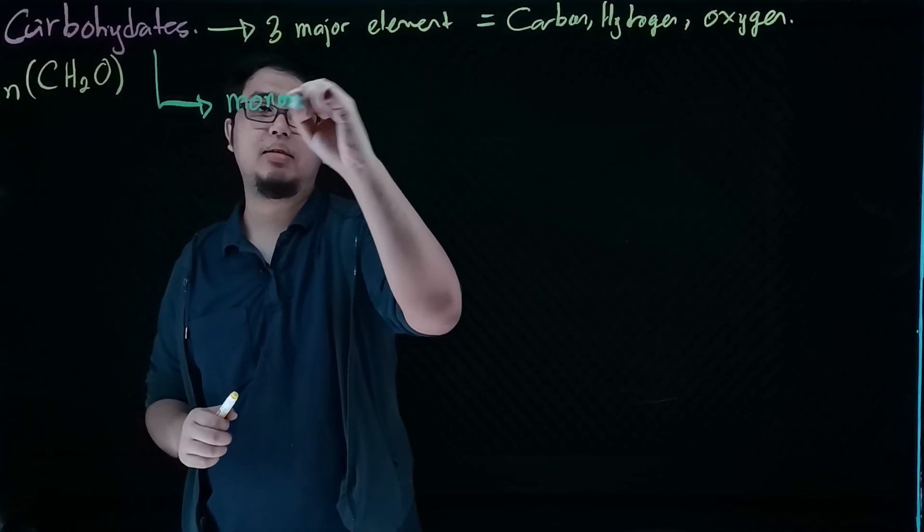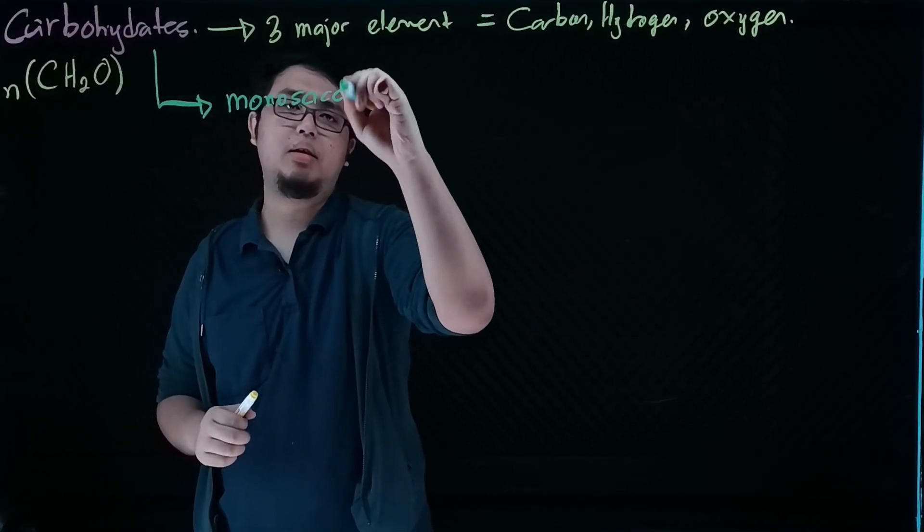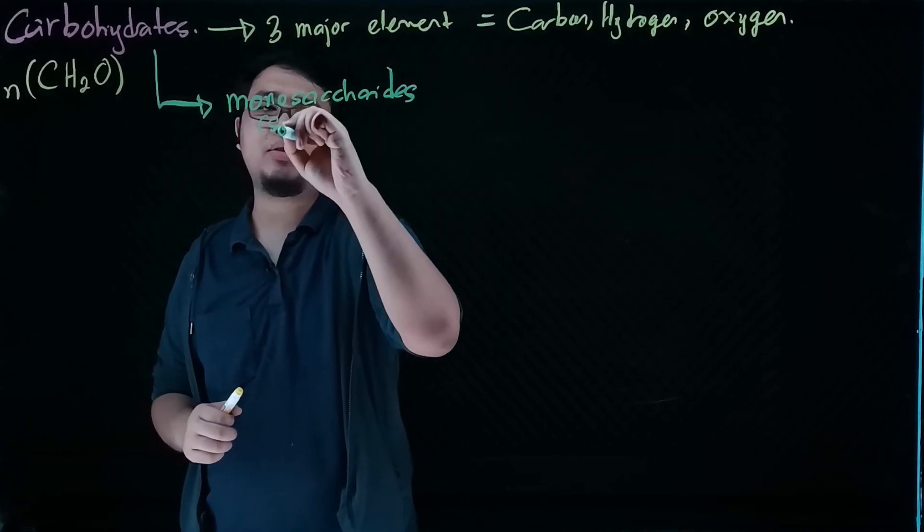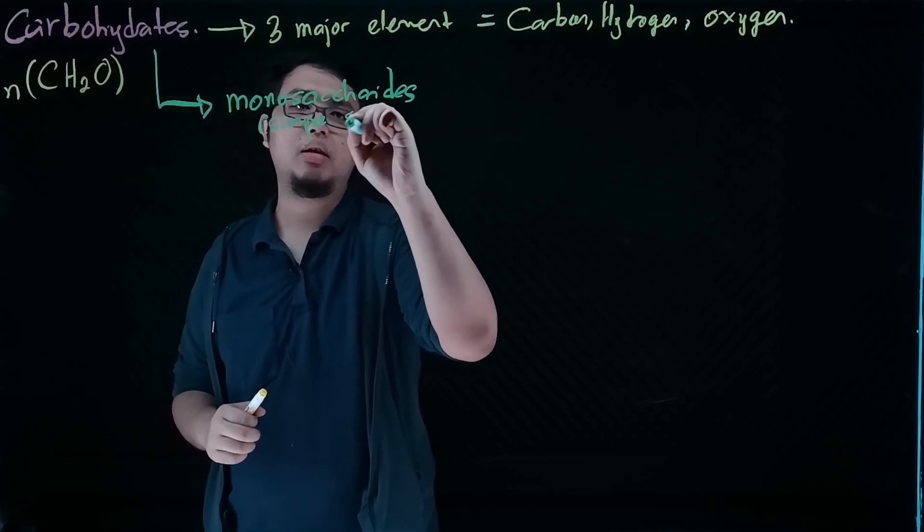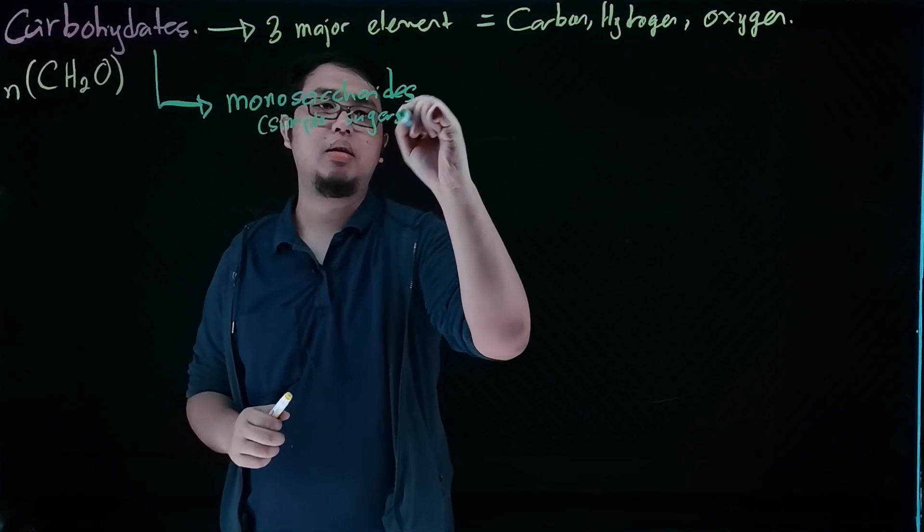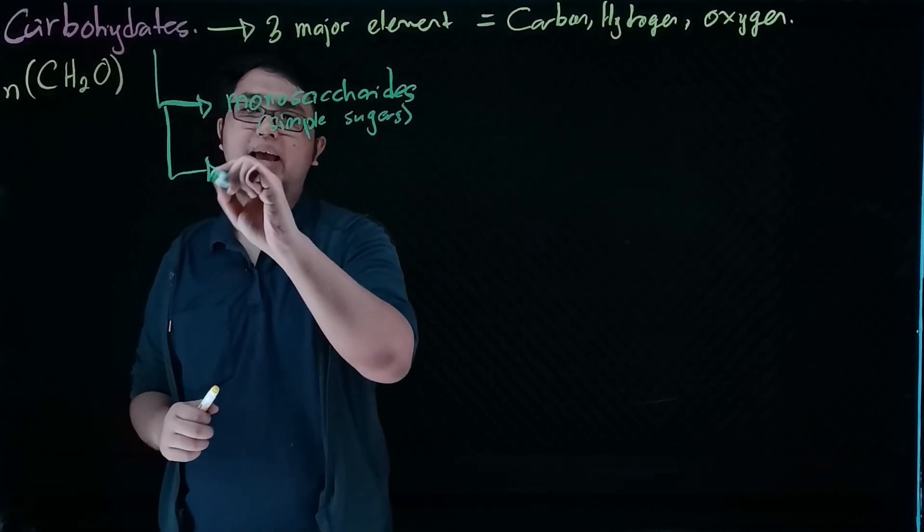Our carbohydrates are separated into three main groups. We have the monosaccharides, which are also known as simple sugars, and we have our disaccharides.